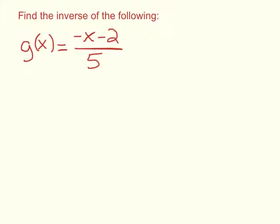We're trying to find the inverse of this particular function, and this one is written in function notation, so it's g of x equals negative x minus 2 divided by 5, and we're trying to find the inverse of that function.